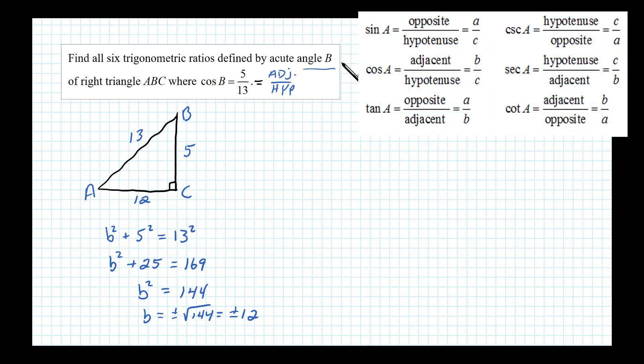Sine of angle B is defined to be the side opposite divided by the hypotenuse. The opposite side of B is 12, so that ratio is going to be 12/13.